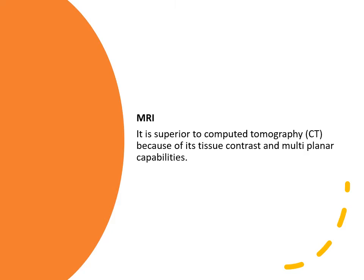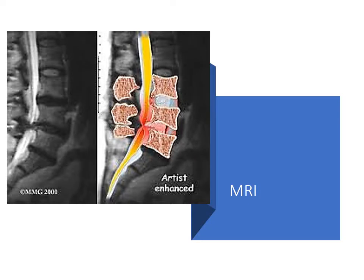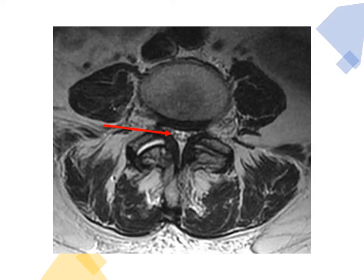MRI is superior and provides multiplanar capabilities with excellent tissue contrast. As seen in this MRI, we can identify disc protrusion with ligamentum flavum hypertrophy and severe narrowing of the spinal canal. In this axial view, there is a disc bulge with hypertrophied ligamentum flavum, severe narrowing of the spinal canal, and facet joint spondylosis on the left side.